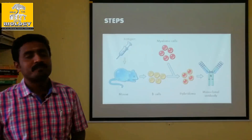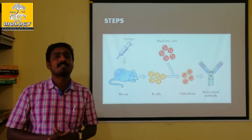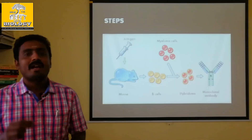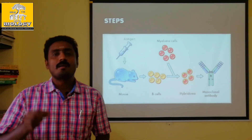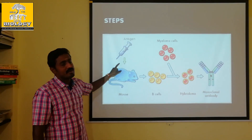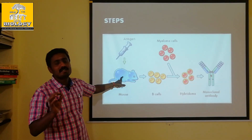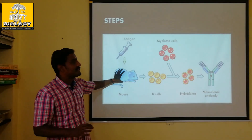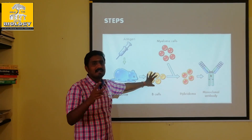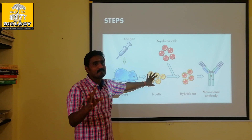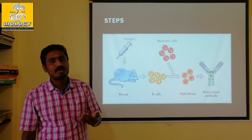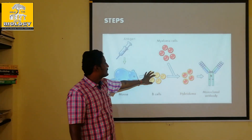If we have a specific antigen, the antibodies against it are produced by B cells — also called beta cells or B lymphocytes. The B cells produce antibodies in response to that antigen.